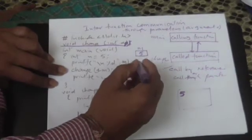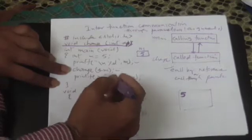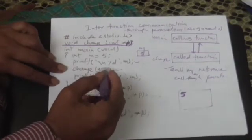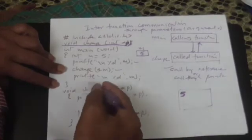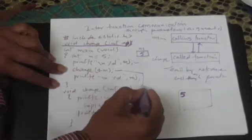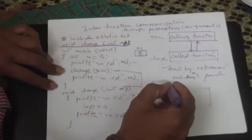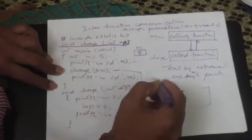Then you are calling the function change with the m variable and we are passing its address. So what happens is immediately the control is transferred to this. And here there is one variable called p.